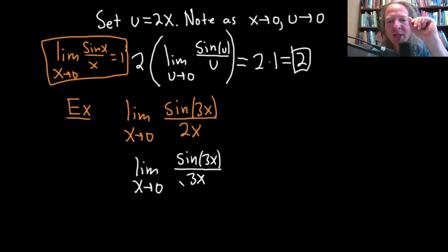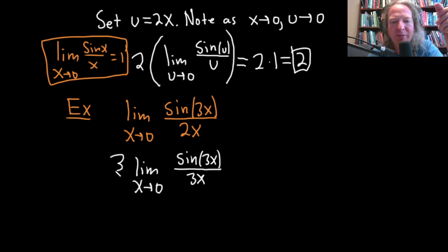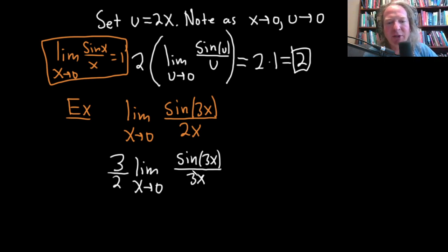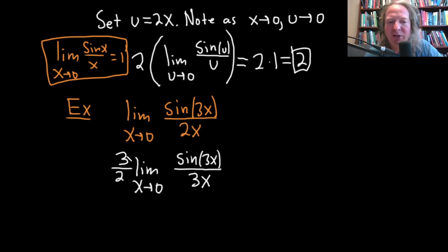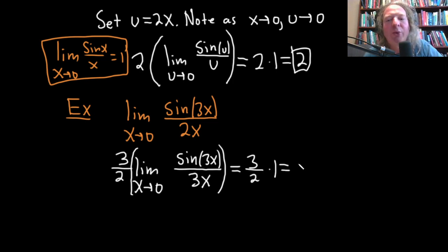So we have sine 3x over 3x. We put the 3 there, so we have to take it away. The 2 gets pulled out on the bottom. The 3s cancel, leaving 2 in the denominator. So it's 3 over 2 times the limit — which by the formula equals 1 — giving us 3 halves times 1, which equals 3 halves.